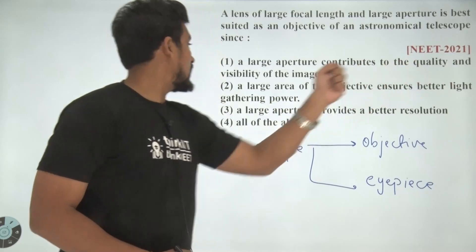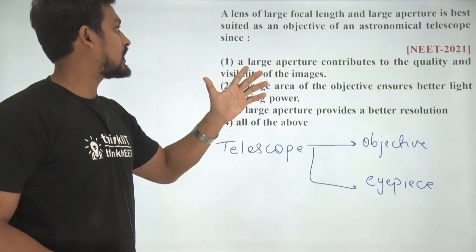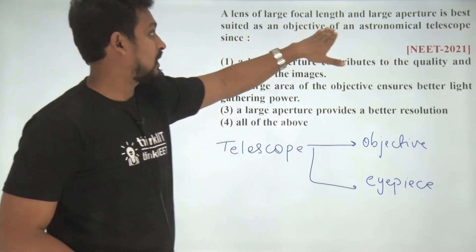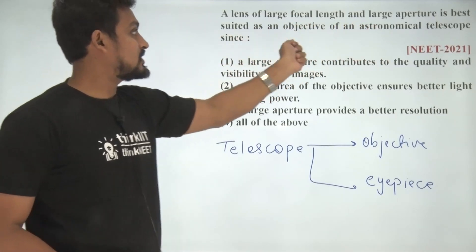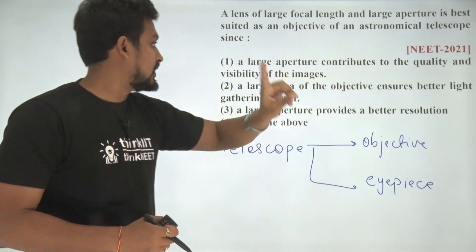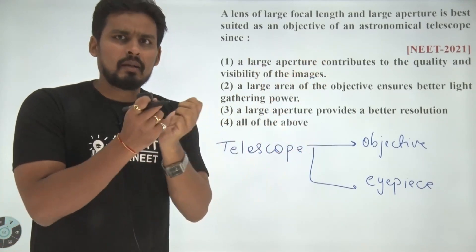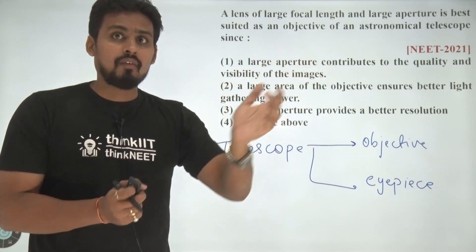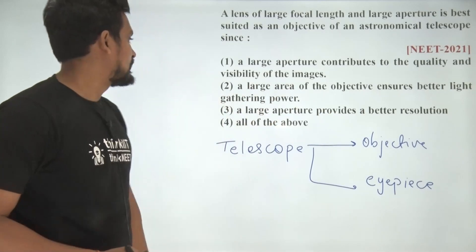What does the first option say? A large aperture contributes to the quality and visibility of the image. Lens of large focal length and large aperture is best suited as the objective. Why? First point: it helps in making a good quality image of whatever object we are viewing.